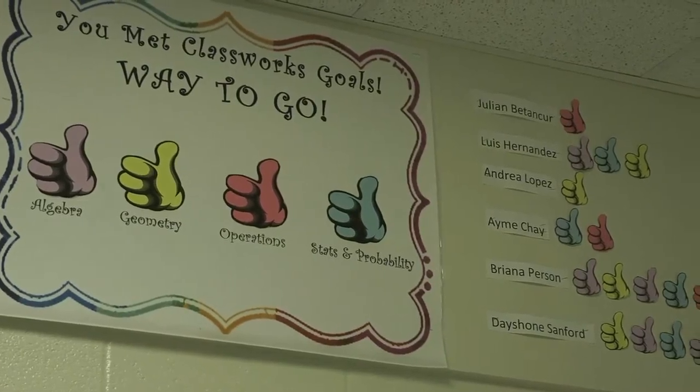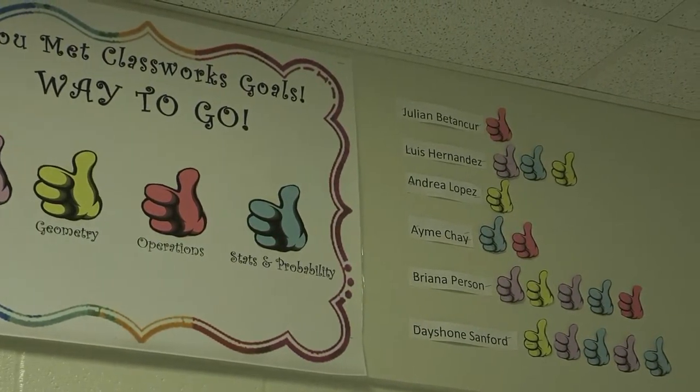Each thumb has a color that represents a strand — we have geometry, operations, stats, and algebra. Every time a student completes the strand on their ILP, they get a thumbs up beside their name, posted in the hall for the whole school to see. It really motivates the kids because they love competition, especially in eighth grade. They like to see their thumbs going up, and they compare — 'I have six thumbs in math but only two in language arts' — which makes them think about what they need to do differently in each content area.